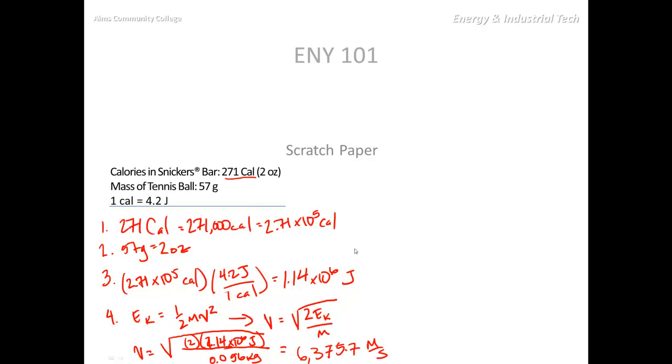Holy bananas. That works out to 14,262 miles per hour. That is one energetic tennis ball.